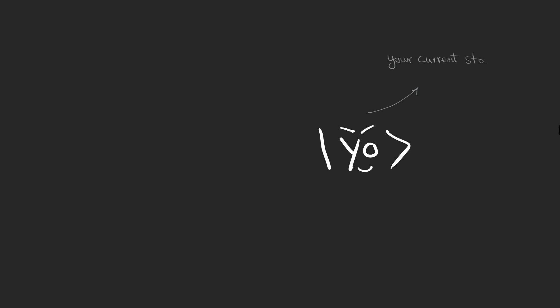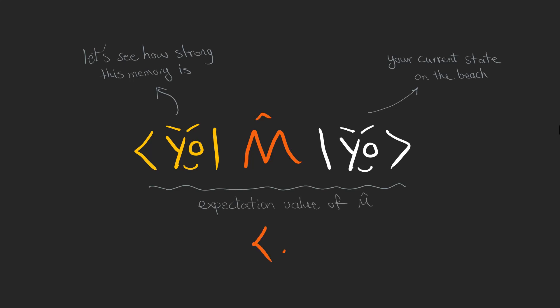Now suppose exactly at this moment a memory comes to your mind. We use a bra to act on the state that has changed by the memory to see how strong the memory is. This expression here is the expectation value of the memory operator and shows how much it has changed the state.